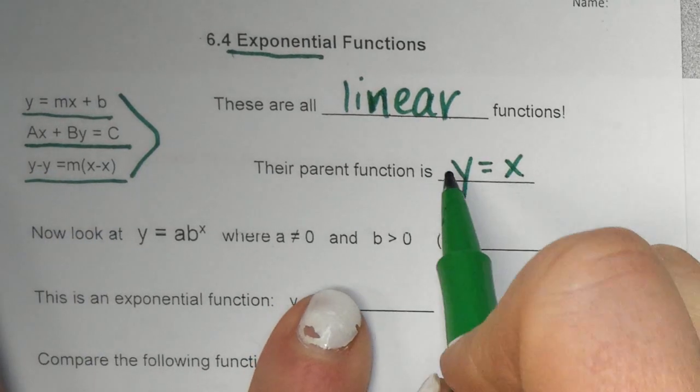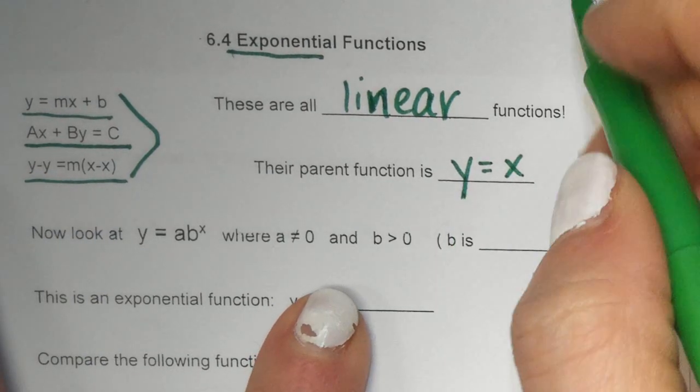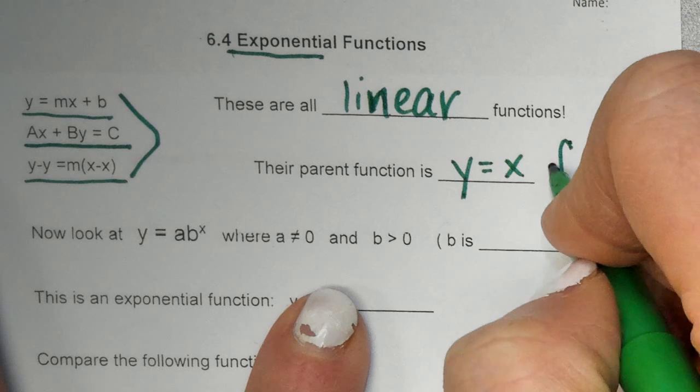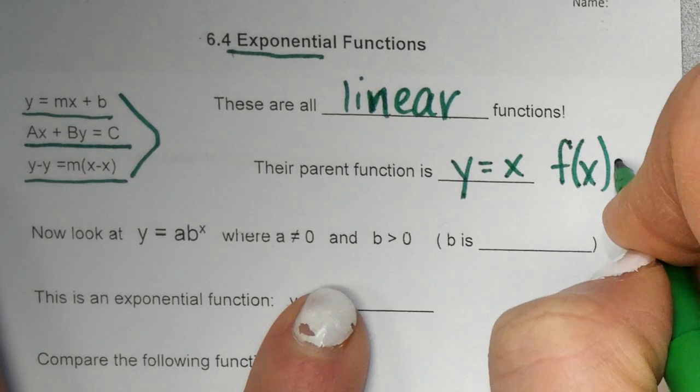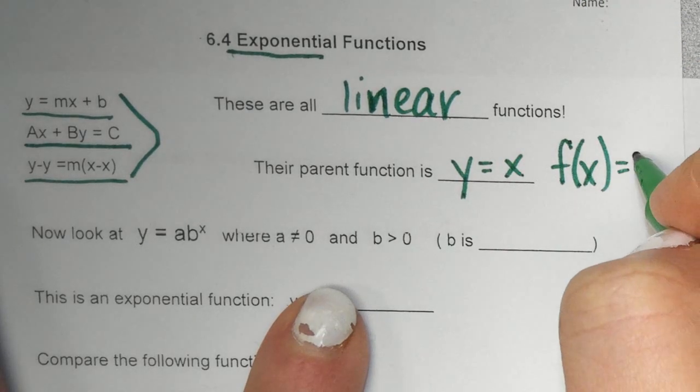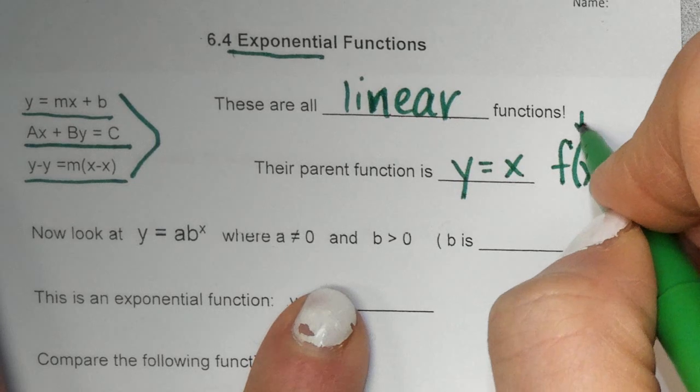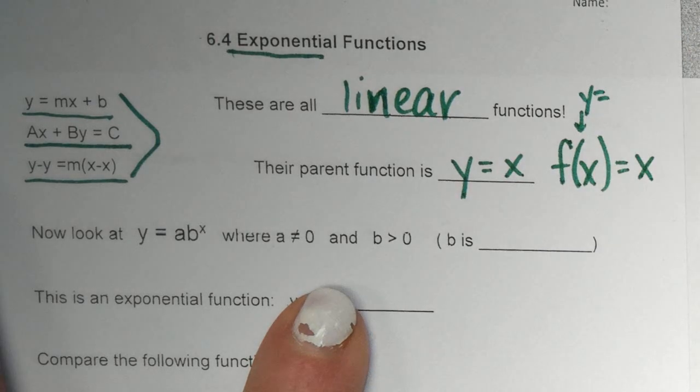And then you might also see it written in a different way. What else is another way to write Y equals? Maybe something like this, right? F of X equals X. This is the same thing as Y equals. Just to refresh your memory.